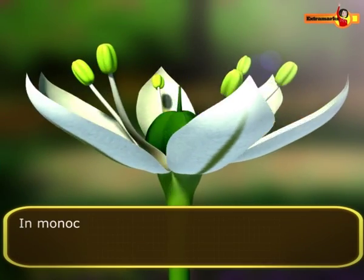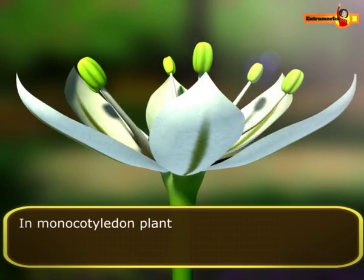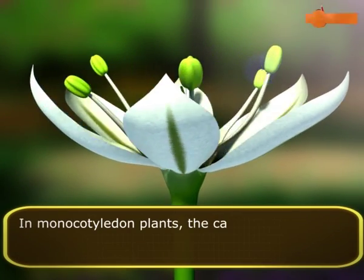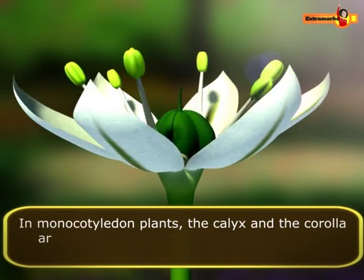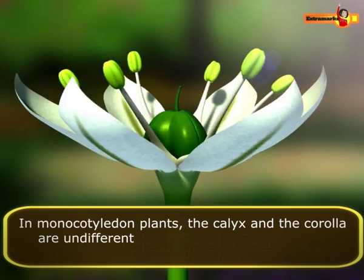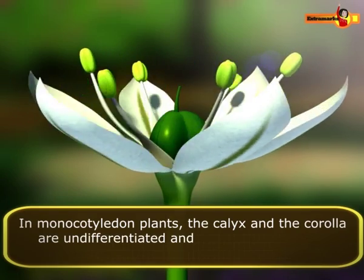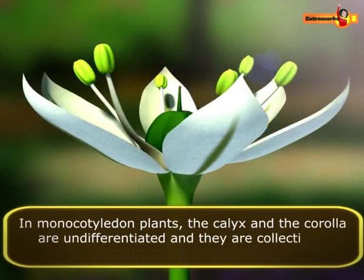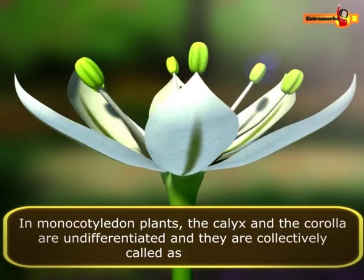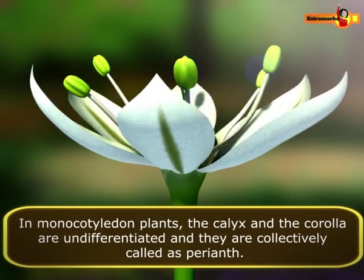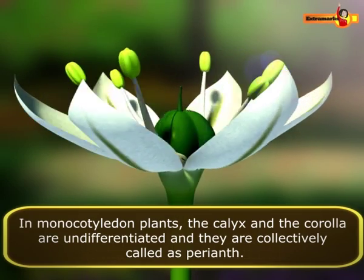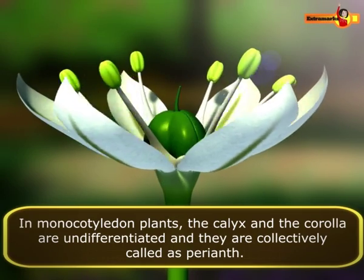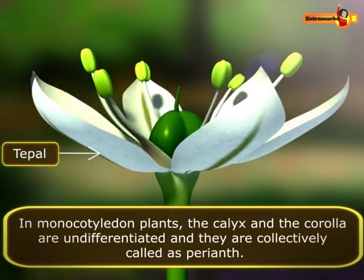In monocotyledon plants, the calyx and the corolla are undifferentiated and they are collectively called as perianth, while the individual members are known as tepals.